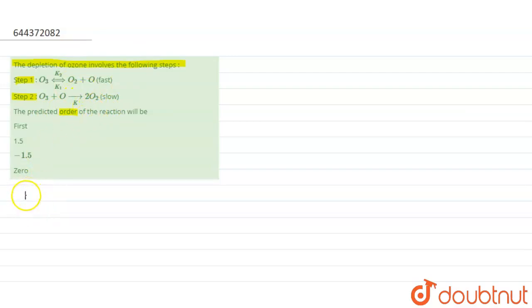The order of the reaction can be predicted by the RDS, that is rate determining step.